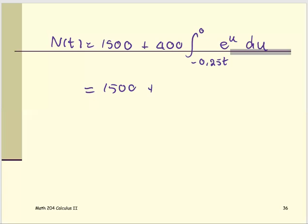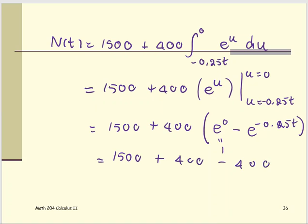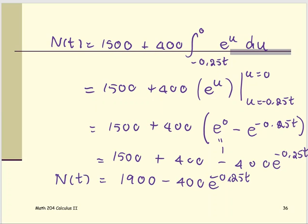So far we have: N at T equals 1500 plus 400 integral negative 0.25T to 0 of e to the u with respect to u. Next, we're going to find the antiderivative of e to the u, which is the same, e to the u. Now we have 1500 plus 400 multiplied by: replace the 0 first, so e to the 0 minus e to the negative 0.25T. Clean up the problem: e to the power 0 is 1, we get 1500 plus 400 minus 400e to the negative 0.25T.